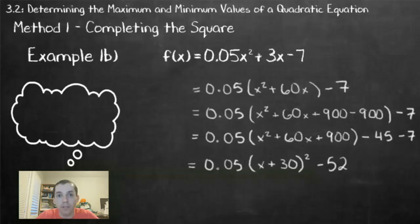Now again, we decide if this is a max or a minimum based on our a value. So a is positive, our parabola opens up, so it's going to be a minimum. And the minimum is going to occur at the point of our vertex. Remember, we take our h and k values to give us the point negative 30, negative 52. So we have a minimum at negative 30, negative 52.